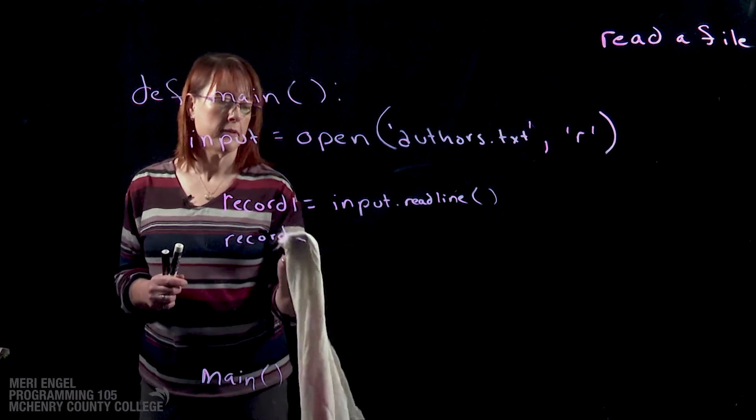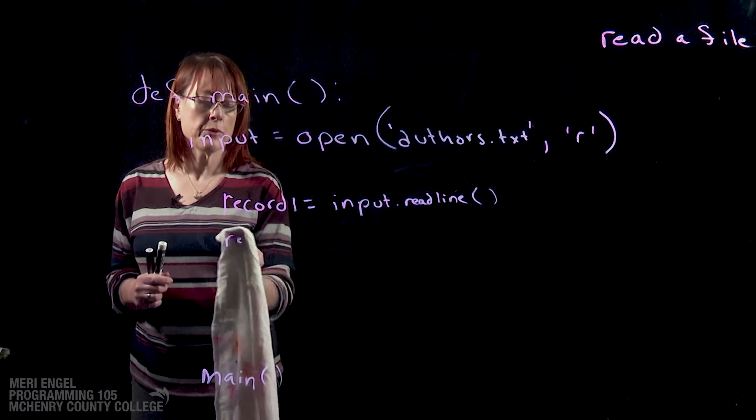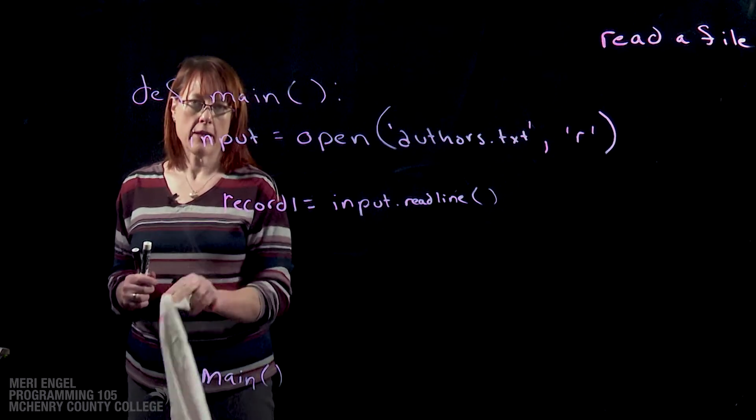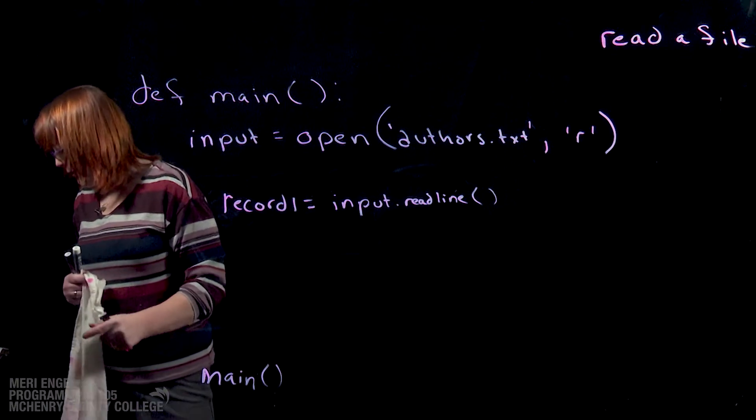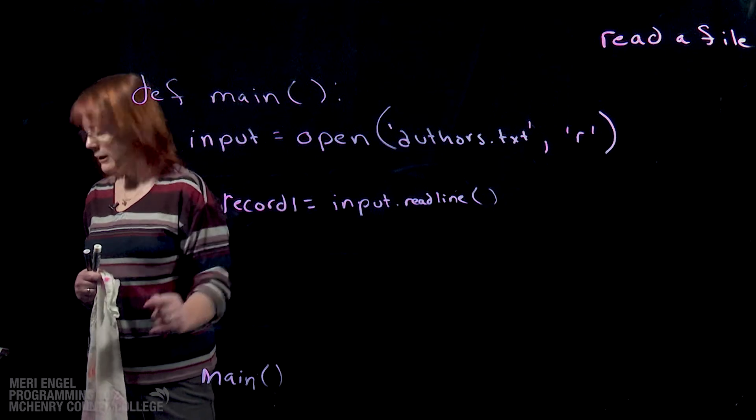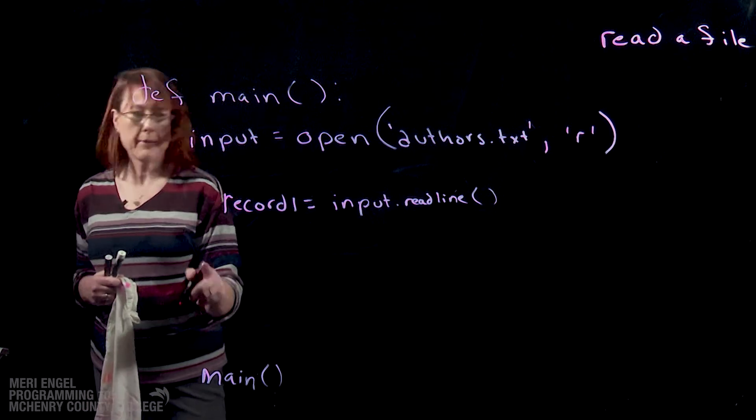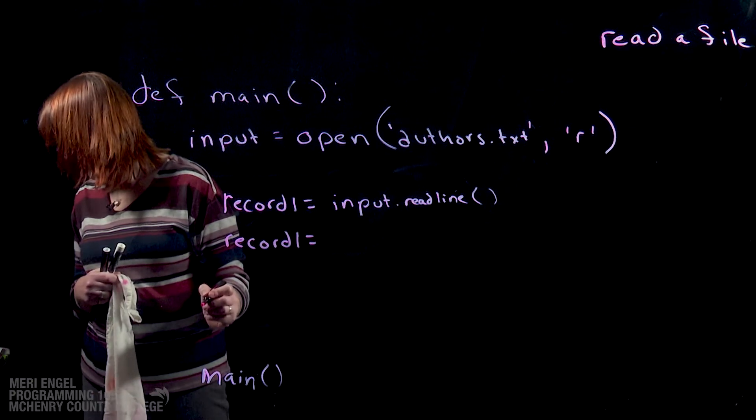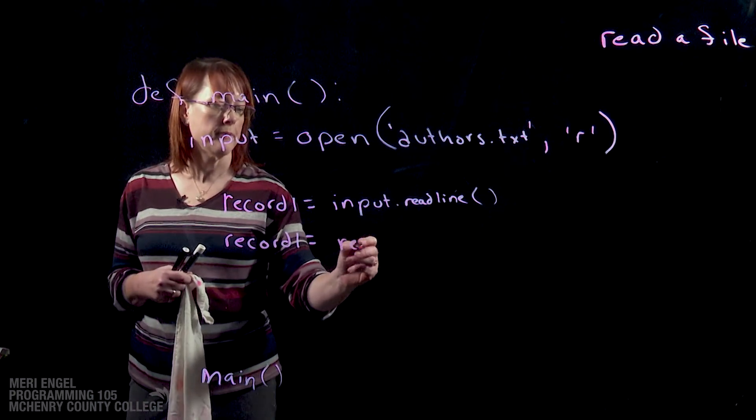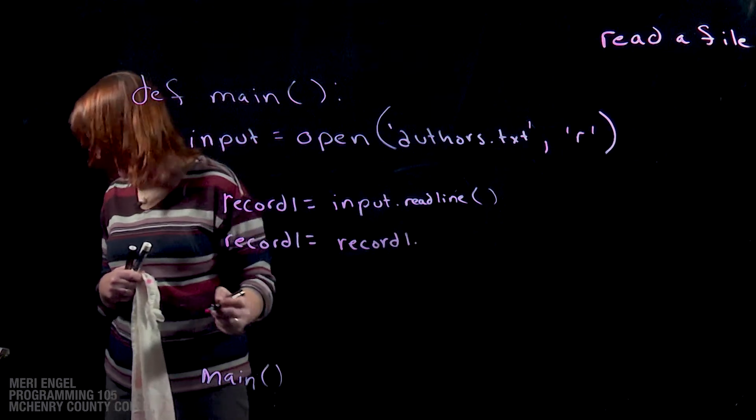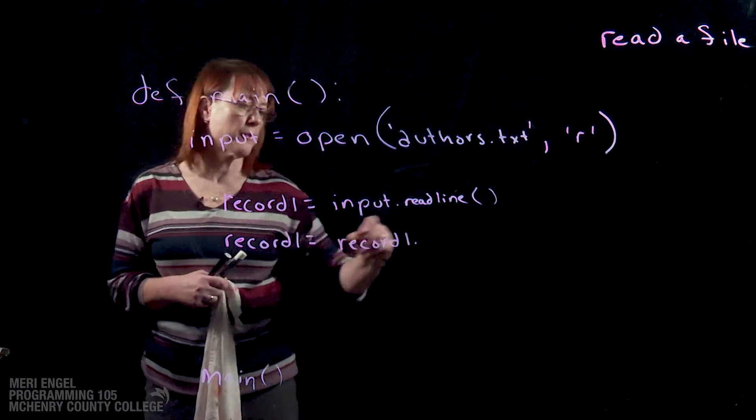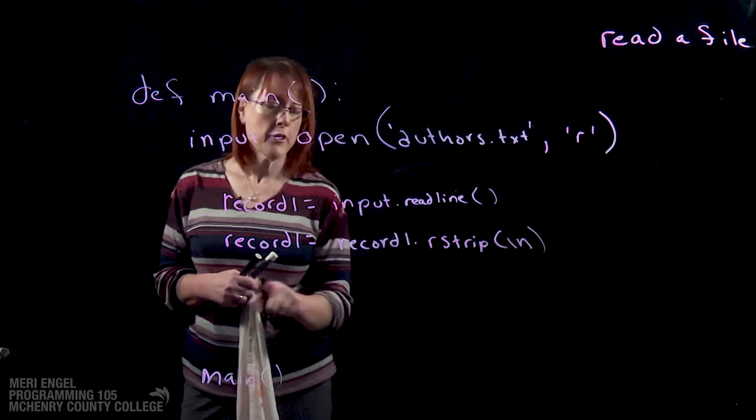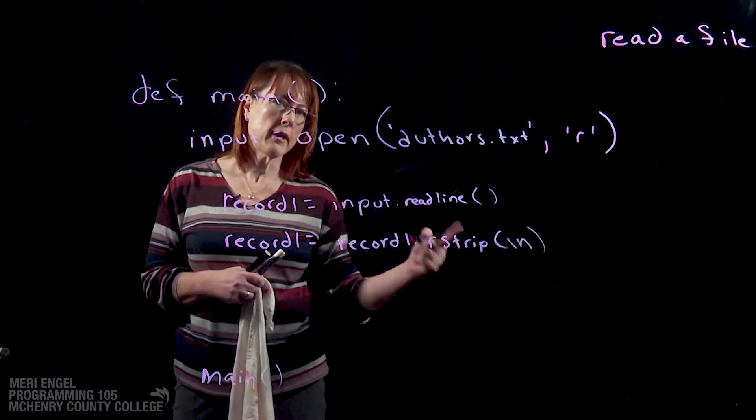Since we put them out with a newline at the end of the record, we might want to do things where we're stripping off that newline. And we can do that once we've created it. So we have record1 equals input.readline. We can strip it by making it equal to itself. Record1 equals record1.rstrip, which means we're stripping to the right, slash n. This is how you would remove that newline. And then if we were to print them, they would go one after the other.